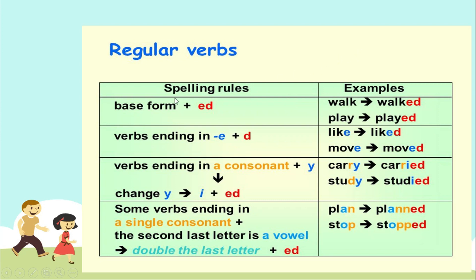Here are the regular verbs rules. As you can see, the spelling rules and the examples: basic form plus ED. La forma base, la forma principal, la que siempre debe ser usada, y la E y la D al final del verbo.